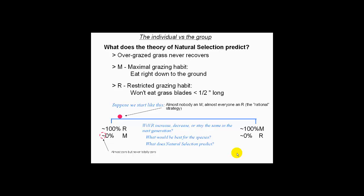The other allele — type R — has a gene which confers on its holders a restricted grazing habit: they won't eat grass blades that are less than half an inch long. So even if they're starving today, they won't eat down beyond that, which is not as good for them under certain circumstances, but it preserves the grass and doesn't kill it off.